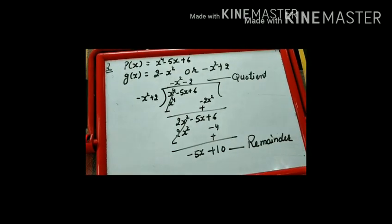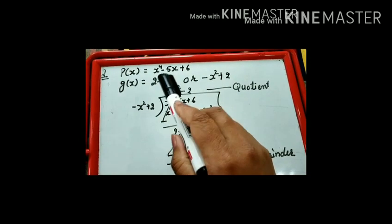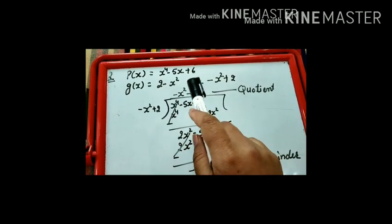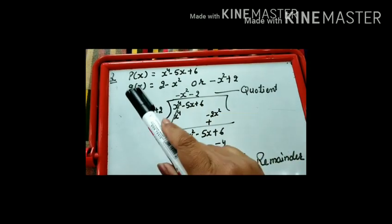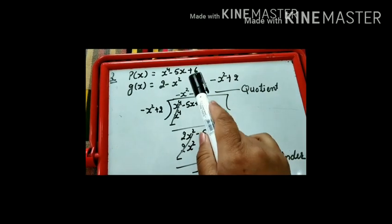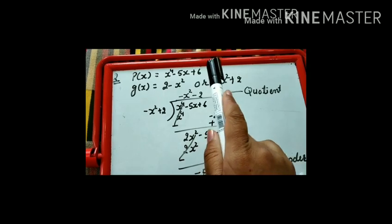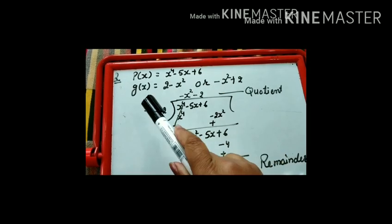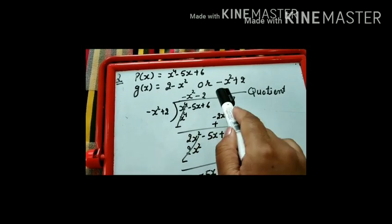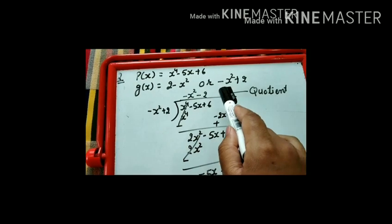Let us take another example. P(x) = x⁴ - 5x + 6, and g(x) = 2 - x². P(x) is already in decreasing order, but g(x) is not in proper order. We will rearrange it: -x² first, then 2.